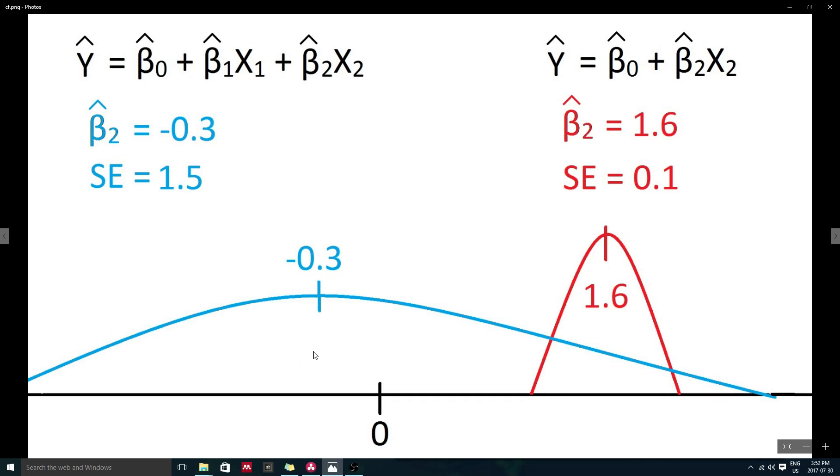Note that if we were to build a 95% confidence interval around our multivariate coefficient estimate, the bivariate estimate would fall well within our interval. So our model isn't necessarily telling us that x2 has a negative relationship with y, but that we are unable to accurately estimate this relationship, especially in comparison to our bivariate model.